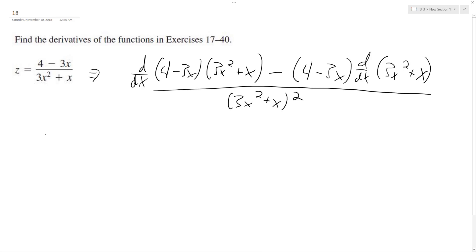The derivative on top is going to be negative 3 times 3x squared plus x minus 4 minus 3x. And then on top, we're going to have 6x plus 1. And that's still all over 3x squared plus x.